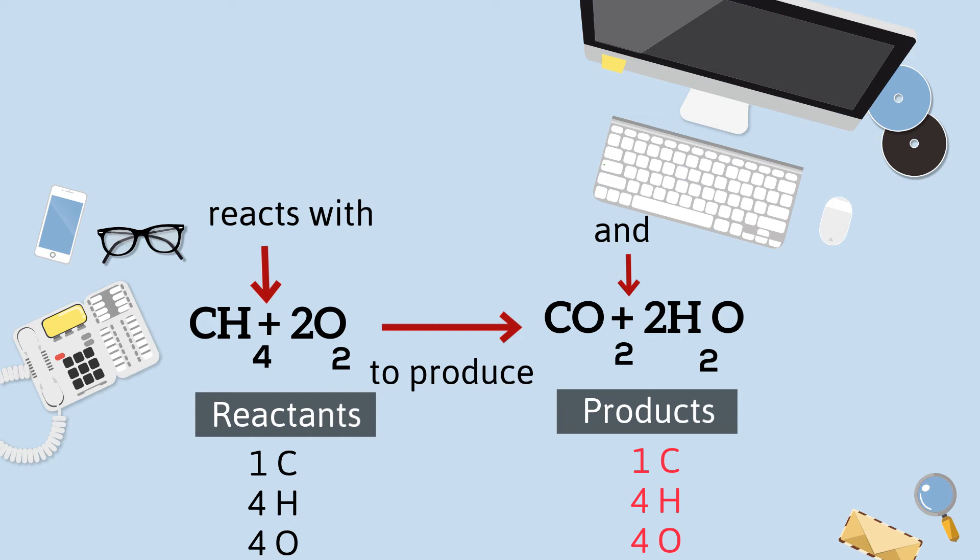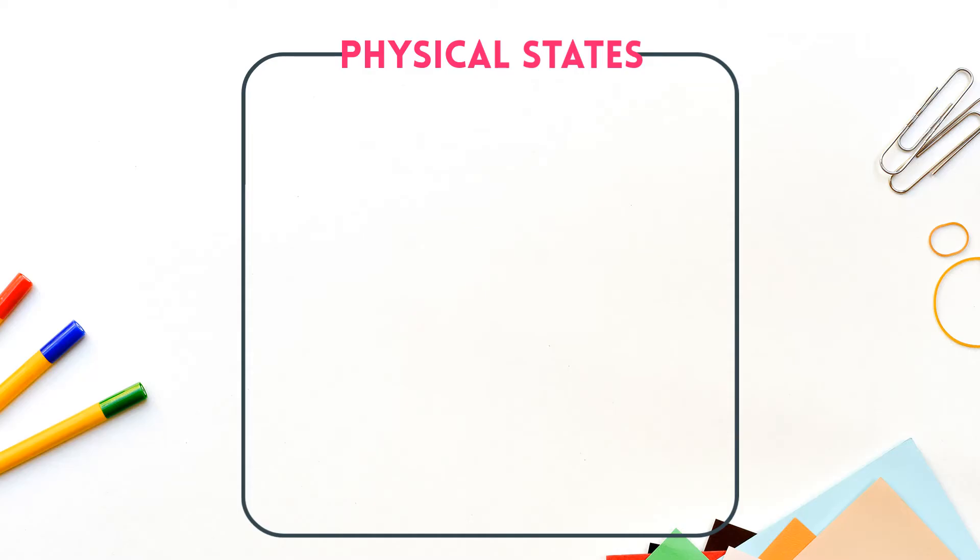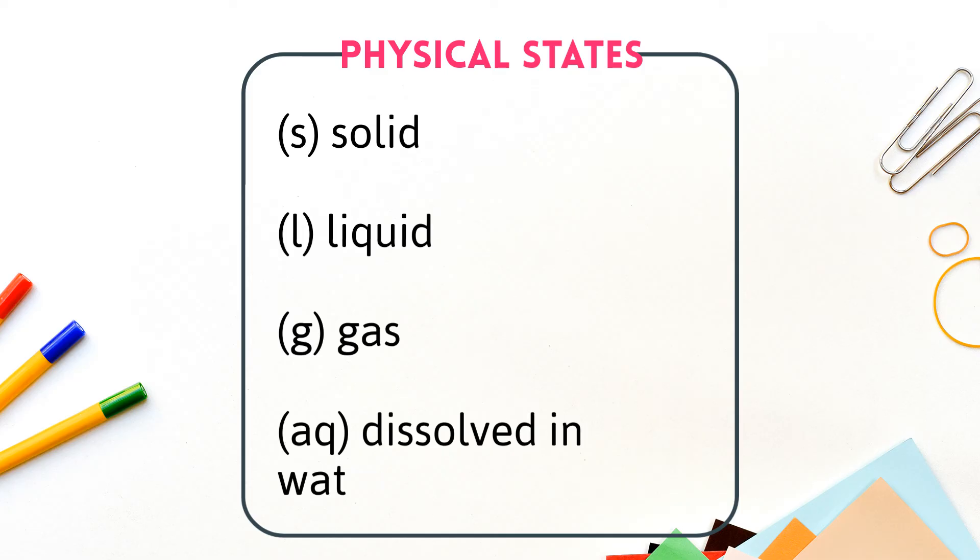Besides specifying the compounds involved in a reaction, you can also indicate the physical states of the reactants. Here are some symbols that are used. The S is a solid, the L is a liquid, the G is a gas, and the AQ is dissolved in water.